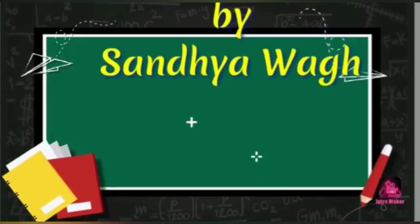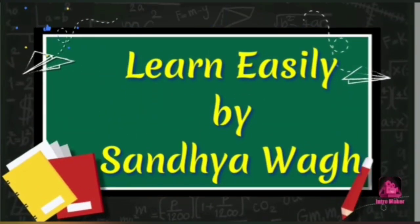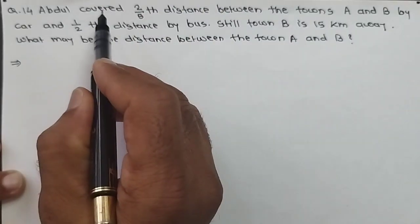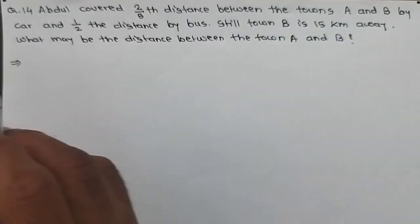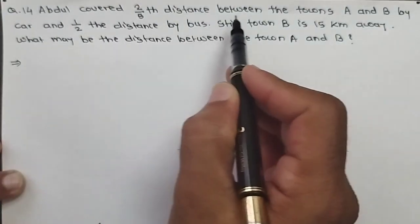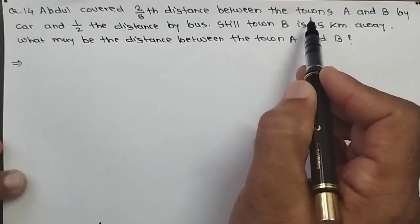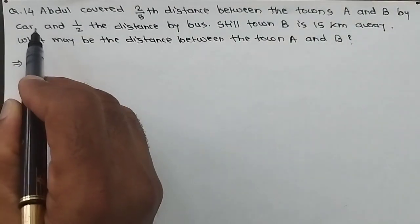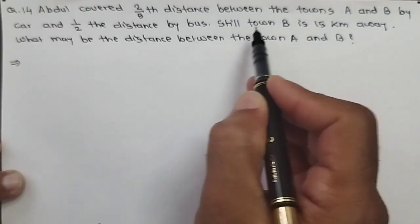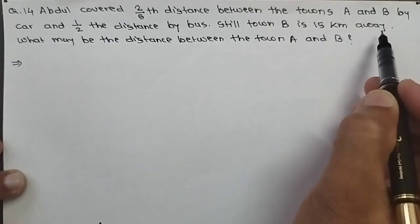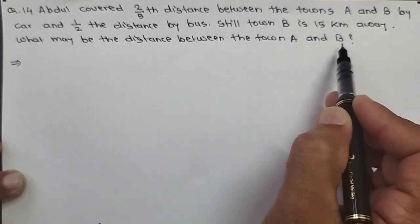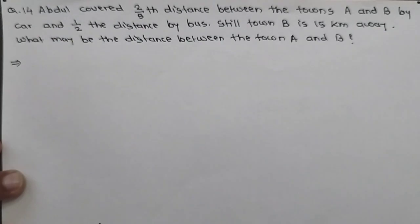Hello dear all, I am Suntosh Vaughan and welcome to channel Learn Easily by Sandhya Vaughan. This is practice question number 14 for chapter Comparing Quantities, class 8 mathematics. The question is: Abdul covered two-fifth of the distance between towns A and B by car, and one half of the distance by bus. Still, town B is 15 km away. What is the distance between town A and town B?